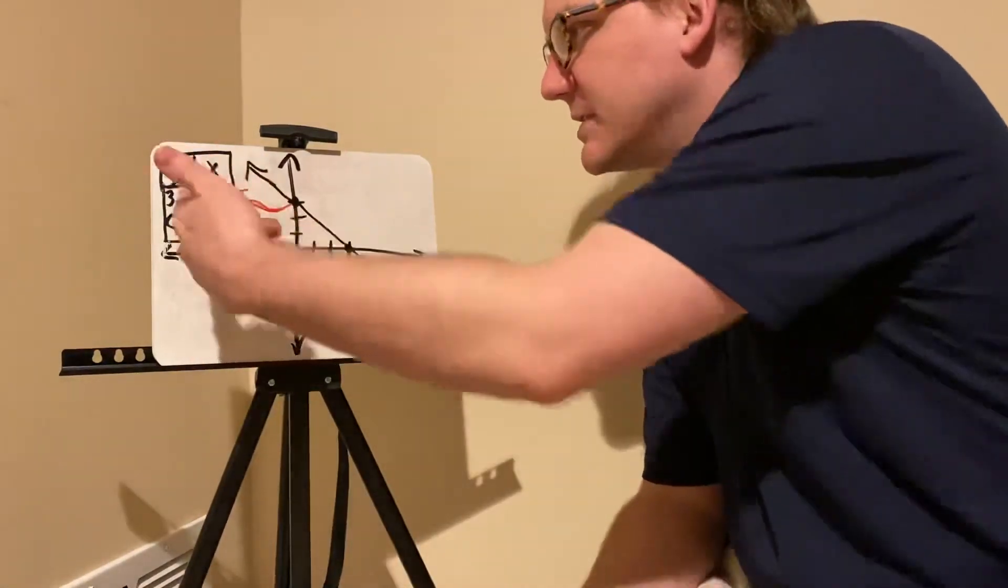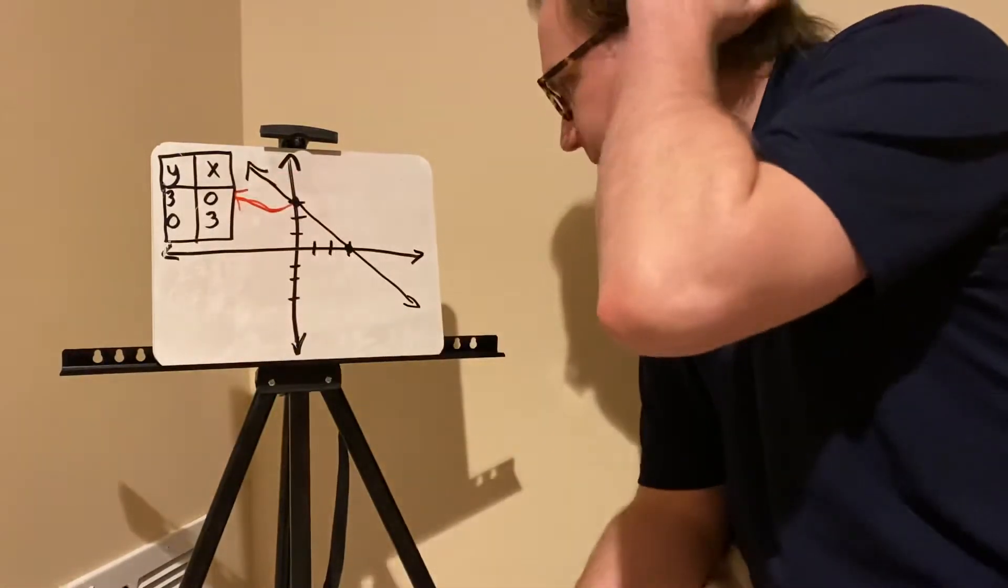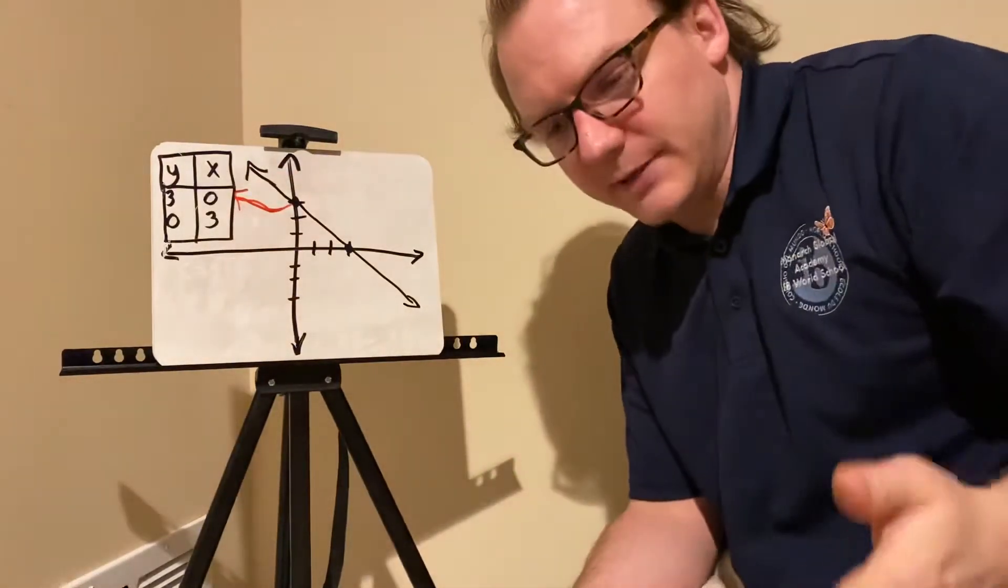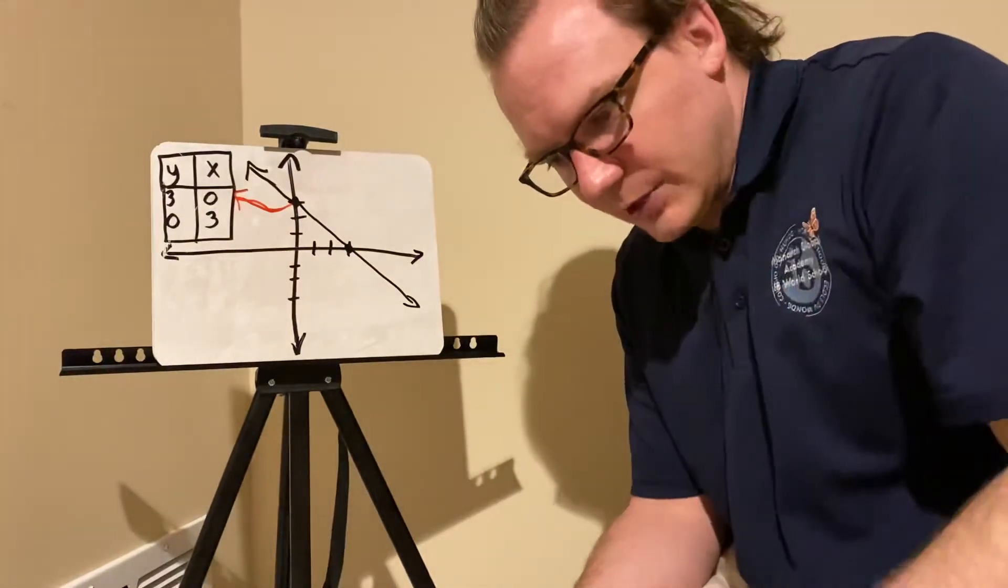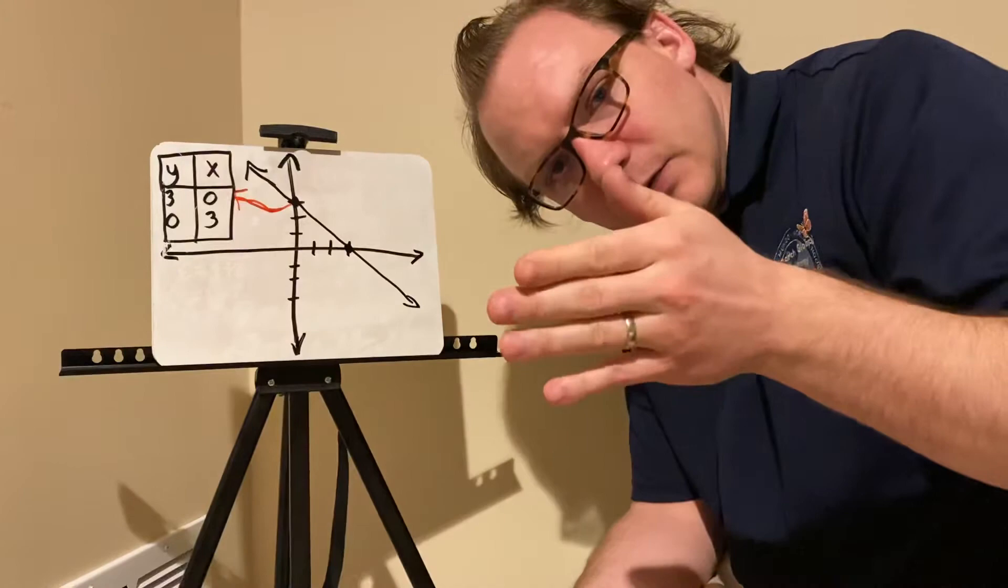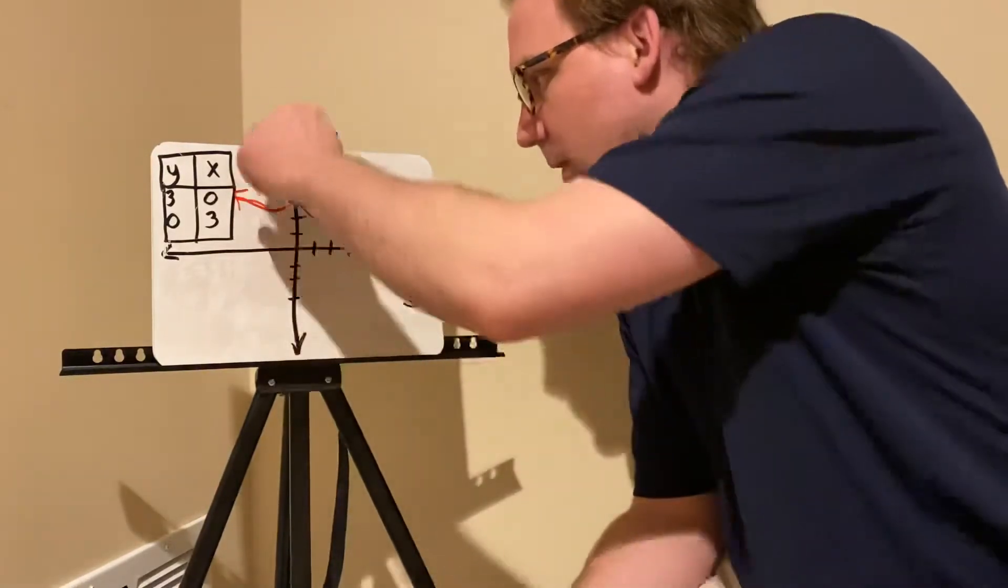So say I have this table of coordinates. I have this graph. The y-intercept is where the linear equation, the line, crosses the y-axis. So here's the y-axis.